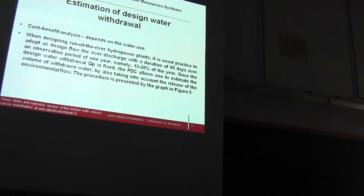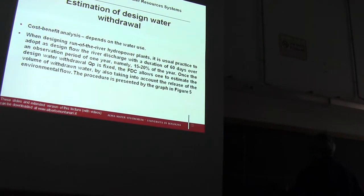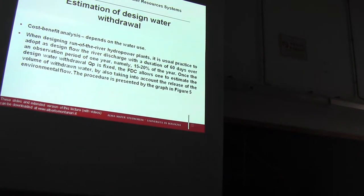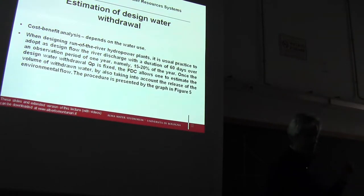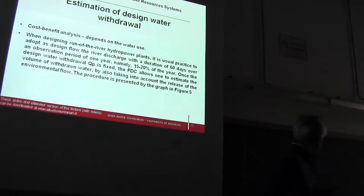What are these quick options? There are some rules of thumb we can use. Once the flow duration curve is estimated, depending on the type of use we have to make for water, there are guidelines for estimating the design flow. For instance, if your water withdrawal serves a hydropower plant, the rule of thumb says the optimal design flow QB is between Q30 and Q60 — meaning the flow with a duration of 30 to 60 days.